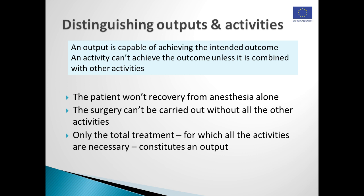This hospital example helps us make the vital distinction between outputs and activities. An output is a service which is potentially capable of achieving its intended outcome. By contrast, an activity can't achieve the outcome unless it's combined with other activities. In the context of the treatment of our heart patient, clearly the patient isn't going to recover from anesthesia alone. If they're wheeled into the operating theater, given an anesthetic, and nothing else happens, that's not going to help them in any way whatsoever. Similarly, the surgery itself can't be carried out without all of the other supporting activities. It's only the total treatment combining all of these necessary activities which constitutes the output.